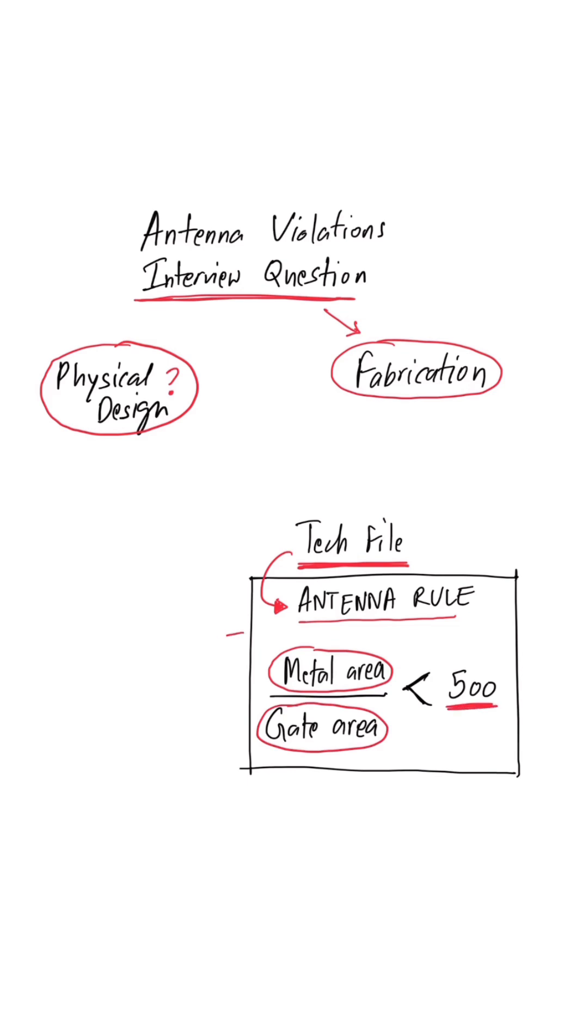So we read these antenna rules as an input to our physical design flow and based on these rules, any potential antenna violations in the design are flagged to us. And we can go ahead and fix those violations during the physical design flow itself.